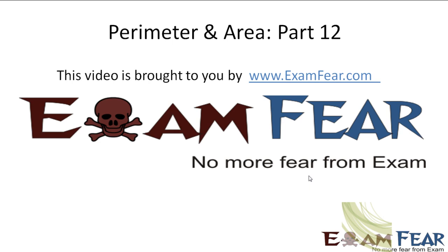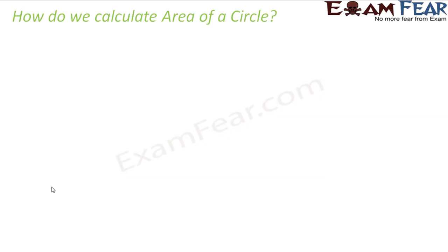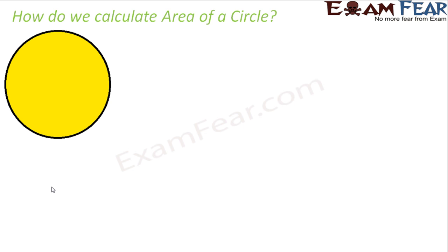Hello friends, this video on perimeter and area part 12 is brought to you by examfear.com. That was all about circumference — now let us focus on area of a circle. How do we calculate the area of a circle? Let's say you have a circle and you have to find out the total region enclosed within it — basically the total area of this yellow region. What should be our approach?